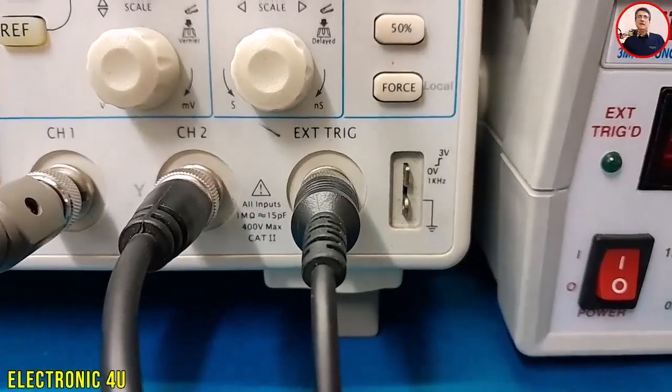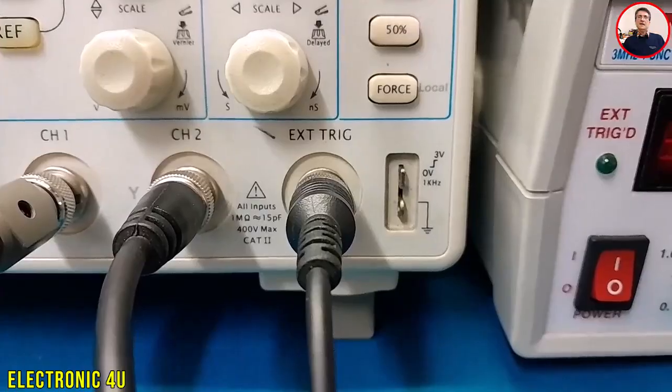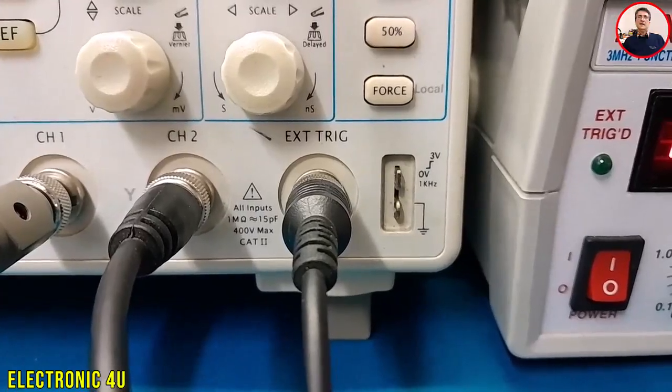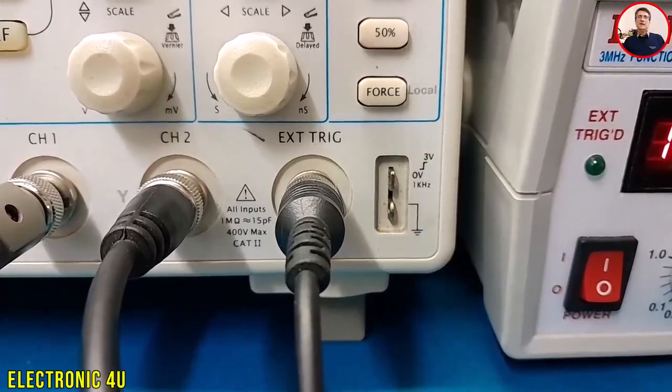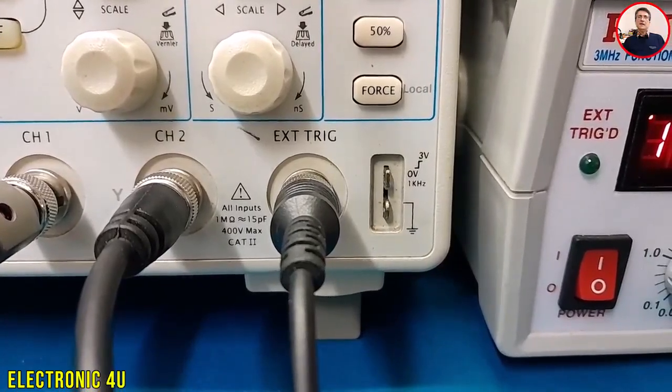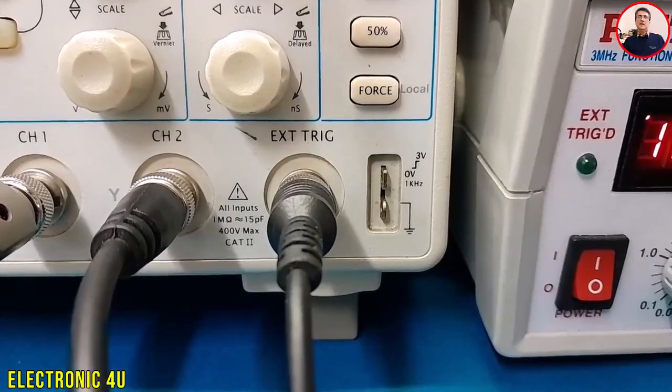So in short, whenever you want to view a signal in relation to a reference signal, like a system clock or a circuit's input, or when the main signal doesn't have a good trigger point, the external trigger is your best friend.